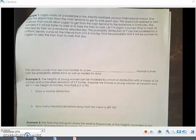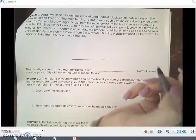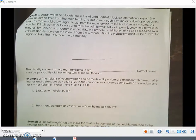We can do a couple examples of continuous random variables so that you're just as comfortable with continuous and discrete. Logan works at a bookstore in the Atlanta-Hartsfield-Jackson International Airport. She takes the airport train from the main terminal to get to work each day. The airport just opened a new walkway that would allow Logan to get from the main terminal to the bookstore in 4 minutes. She wonders if it would be faster to walk or to take the train to work.